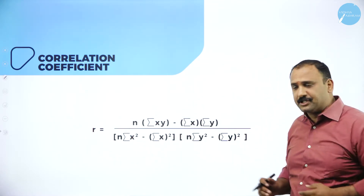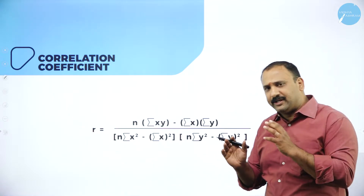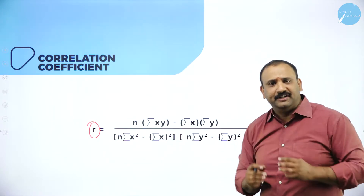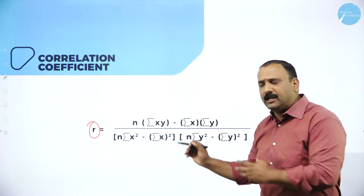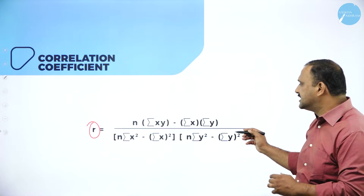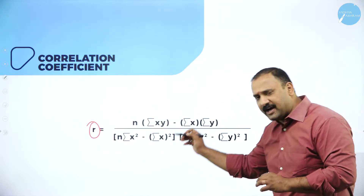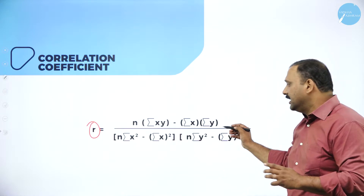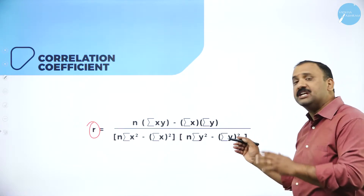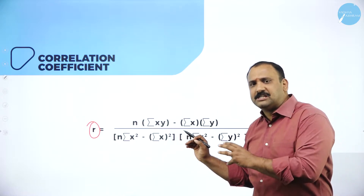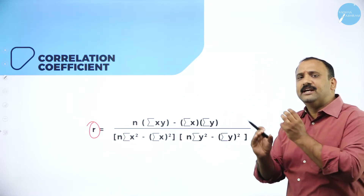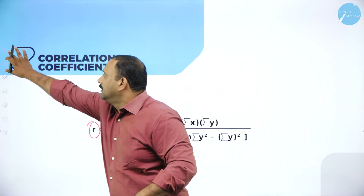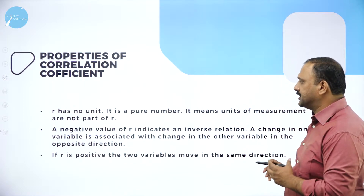Now we are going to learn about the coefficient of correlation. The value r is defined as the coefficient of correlation. The formula is: r equals n into summation xy minus summation x into summation y, divided by the square root of n into summation x squared minus summation x squared whole squared, into n into summation y squared minus summation y whole squared. The formula is simple — it's a repetitive method of squaring.